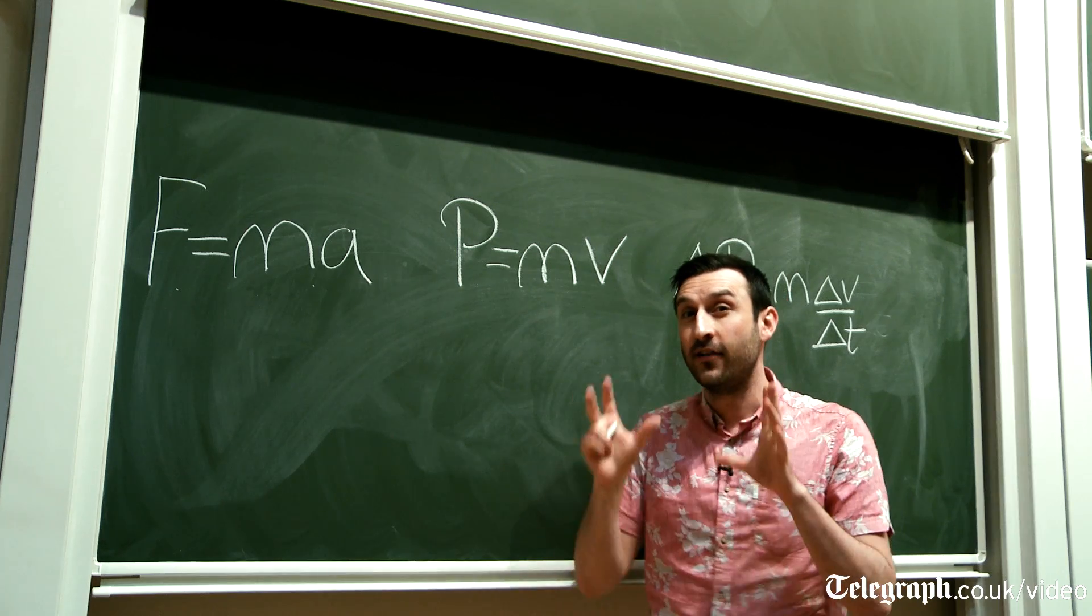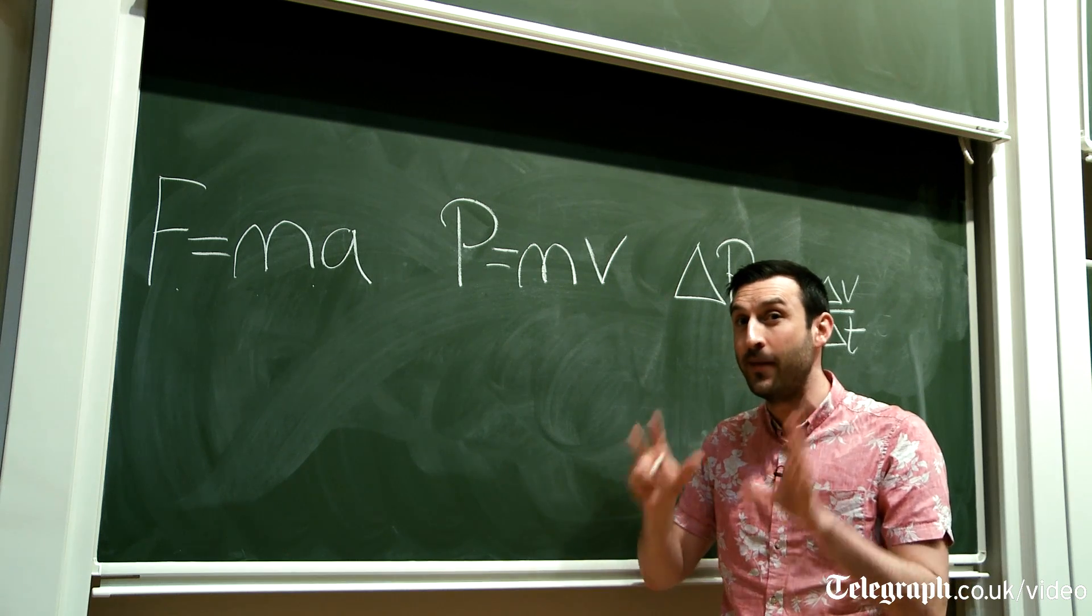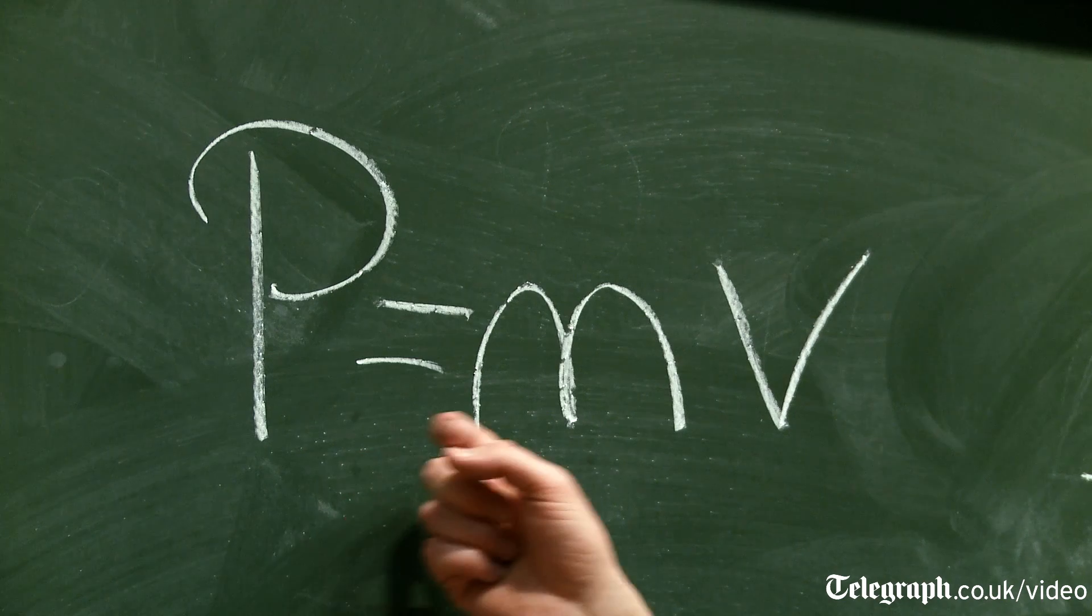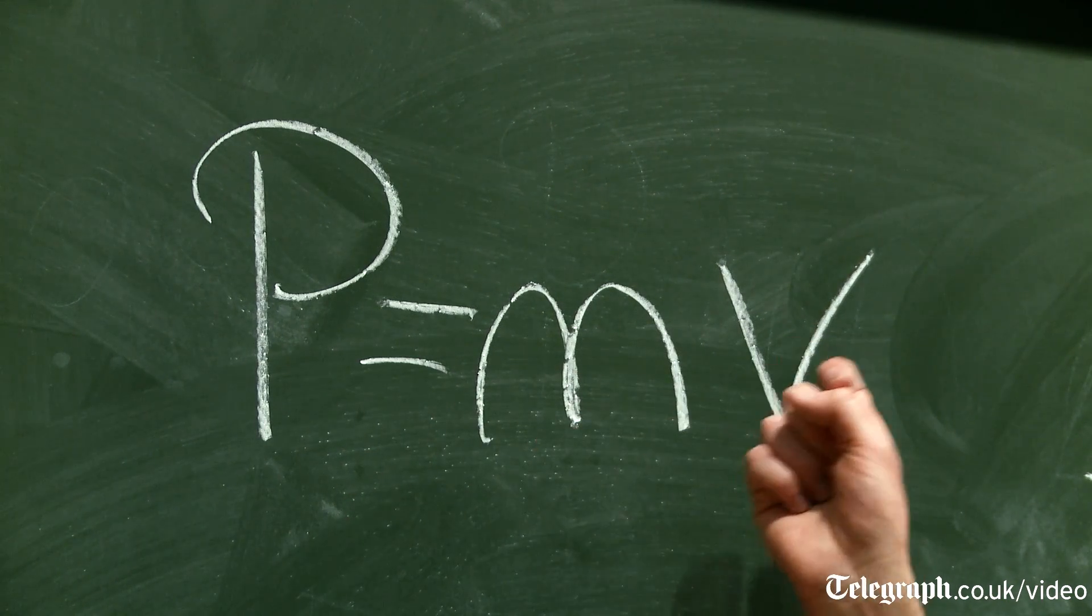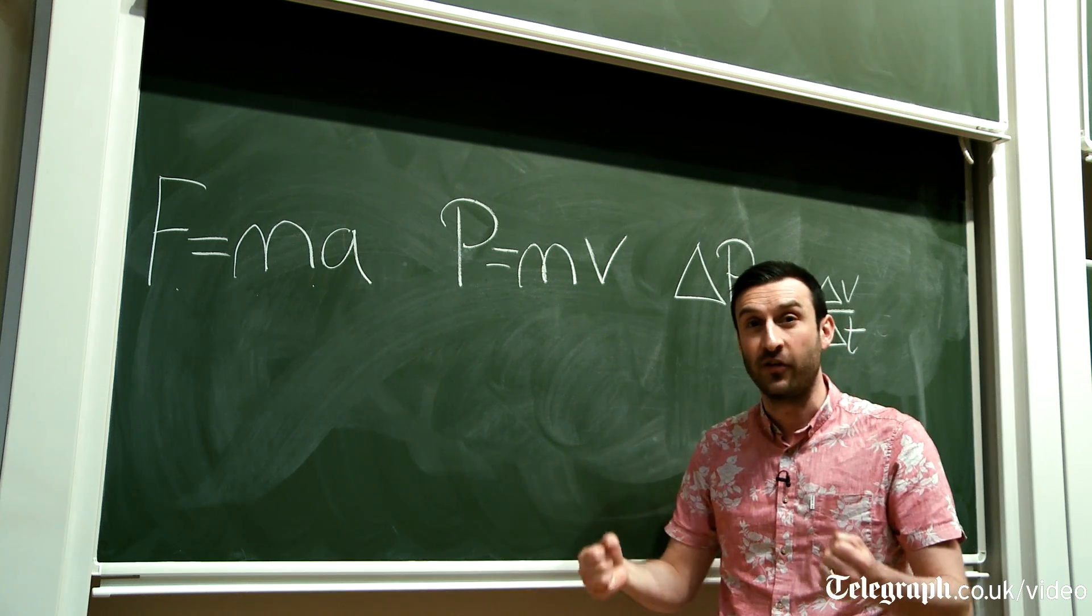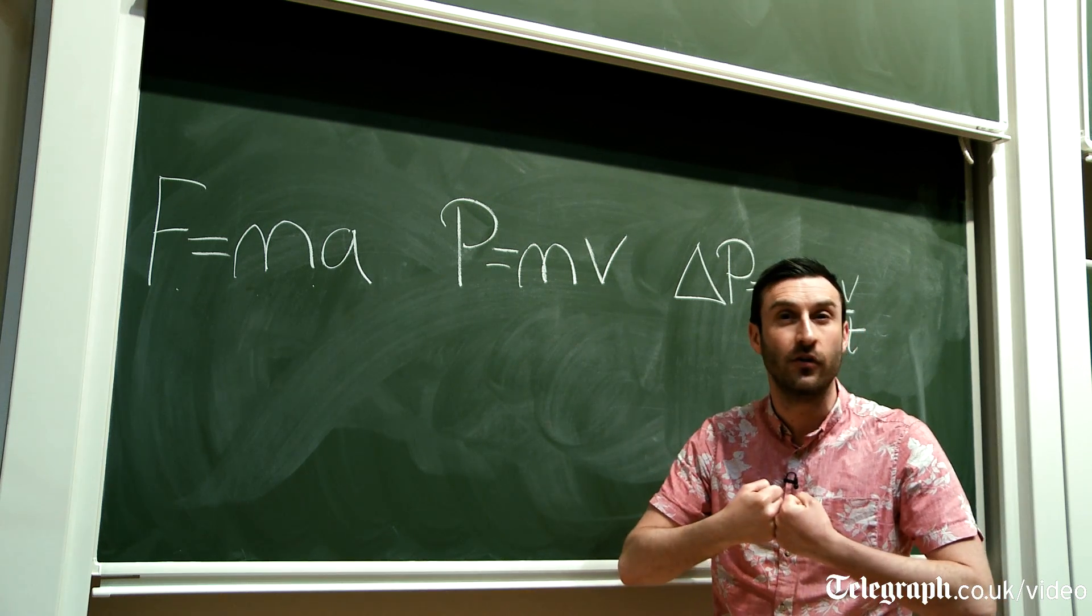Now the next equation is something that you might not be familiar with, and that's the equation for momentum. And that's equal to the mass times velocity. Now momentum is a quantity that can be passed from one object to another object when they interact, when they come into contact.